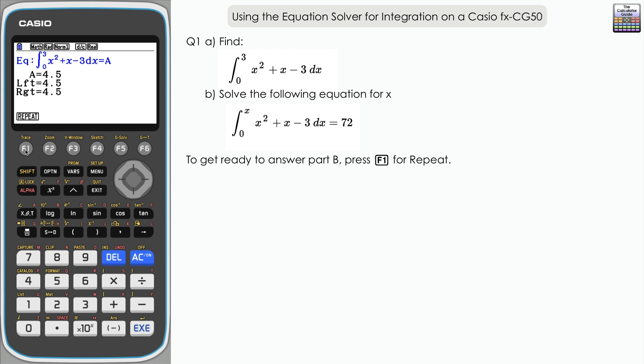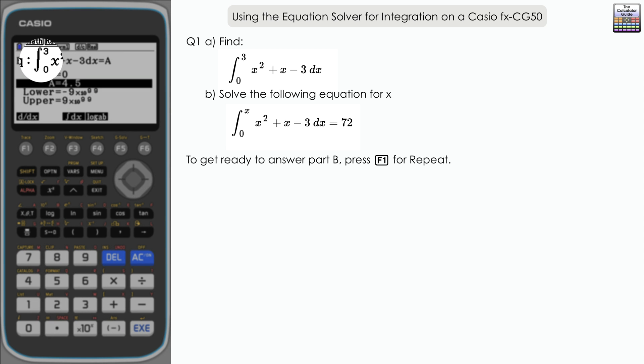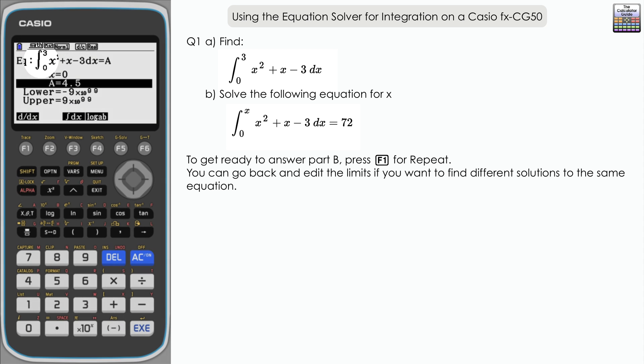Because we want to use this same setup again, we're going to press F1 repeat and go back and edit some of our input. If we had further solutions to find, like a different set of limits, we could just go back and edit the limits, keep all the other setup the same, and find a different value for A. We've got a lot of flexibility there if we need to find multiple results, but there was only one needed for part A.